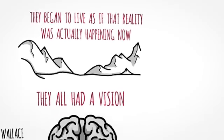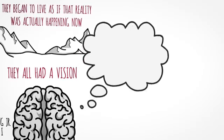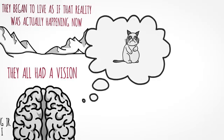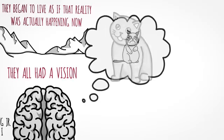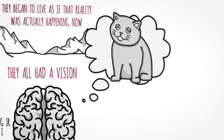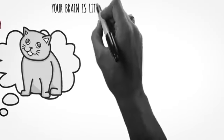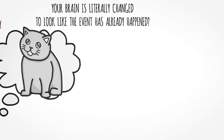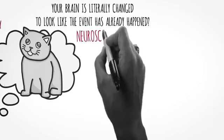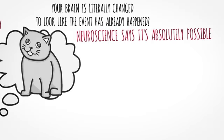So can you believe in a future that you can't see or experience with your senses yet, but you've thought about enough times in your mind that your brain is literally changed to look like the event has already happened? Neuroscience says it's absolutely possible.